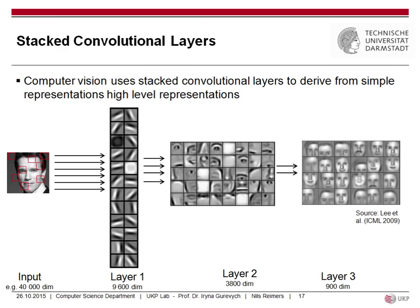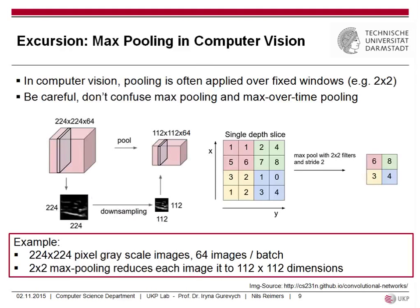In computer vision, each convolutional layer is typically followed by a max pooling layer for downsampling. So: first layer works directly on pixels, max pooling gives patches, then those patches are fed into another convolutional layer and another max pooling, until a final label is derived — for example, 'can I see a car, a horse, a cat?' in an image. This stacked structure is quite common in computer vision but not so common in NLP.